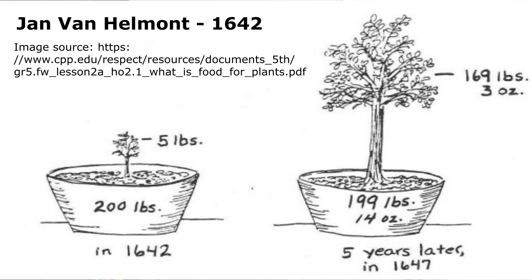He had a great analogy in the book about an experiment where a guy took a small seedling tree, put it in a pot, and weighed the soil exactly. He knew how much soil it had, and then all he did was add distilled water — no fertilizer, no minerals, nothing else was ever added. He grew it for about 10 years.